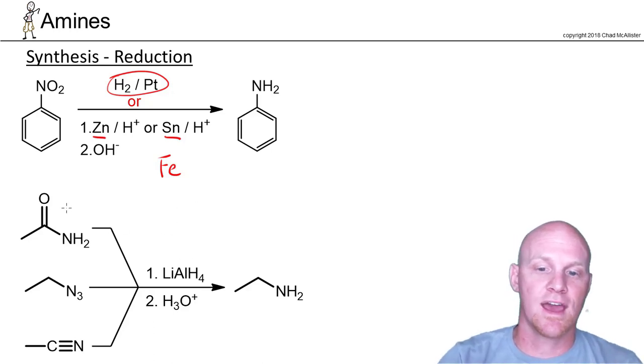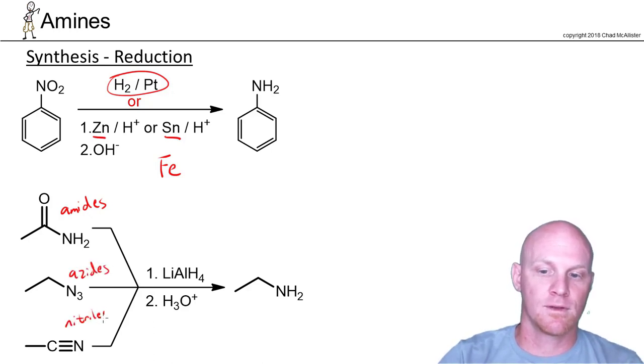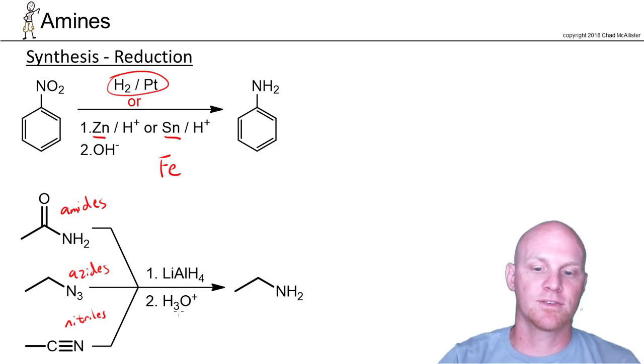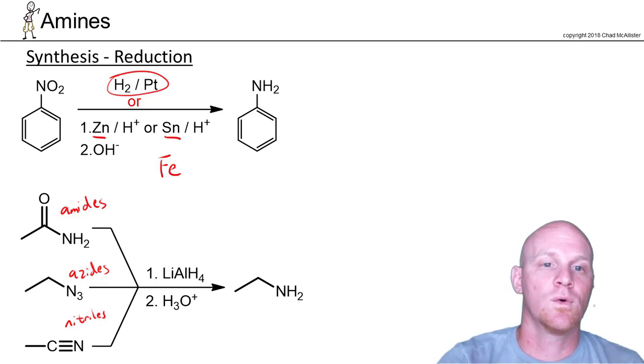You can also reduce amides, azides, or nitriles with lithium aluminum hydride. Technically, a couple of these can be reduced with hydrogen as well, but I want to focus on the fact that they're all reduced by lithium aluminum hydride to an amine.